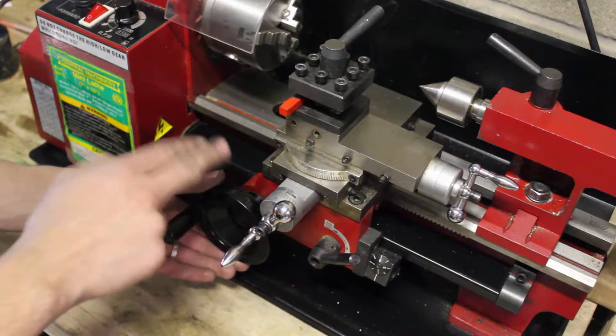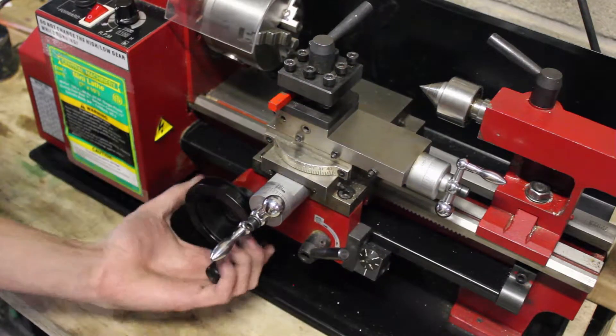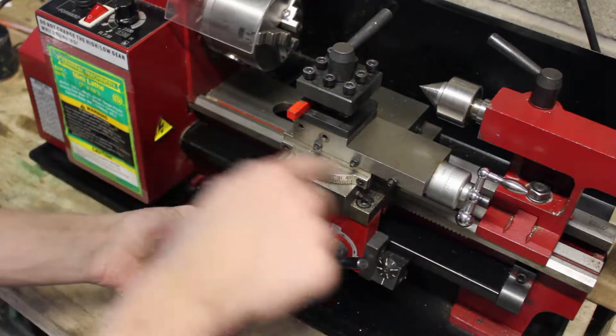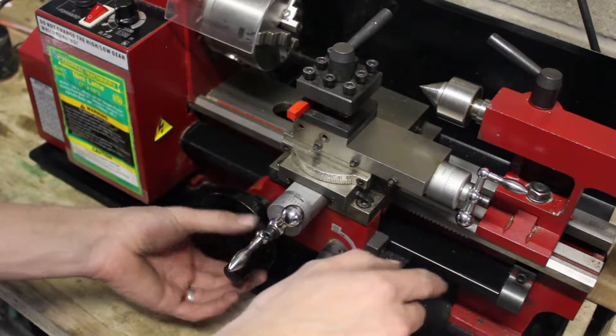Basically, this knob here, if you turn it, it moves the carriage back and forth along this would be the Z axis in lathing.